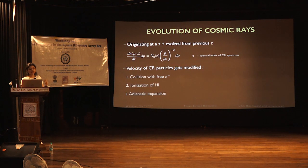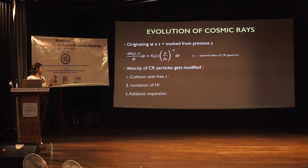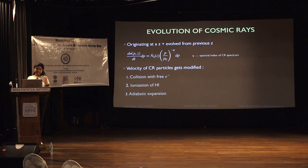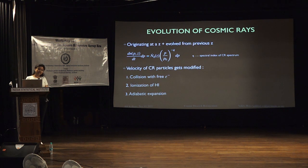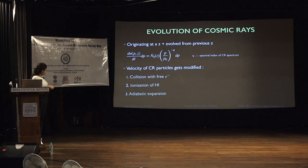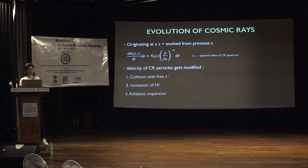From these very early stars, which are ending their lives as pair instability supernovae, they inject cosmic ray protons into the intergalactic medium. We calculate that from the injected spectra. Along with the injected cosmic ray particles, we take into account the evolved cosmic ray protons coming from earlier redshifts as well. As these particles propagate through the IGM and through star-forming regions, their energy gets modified due to collisions with free electrons, ionization with neutral hydrogen, and the adiabatic expansion of the universe.